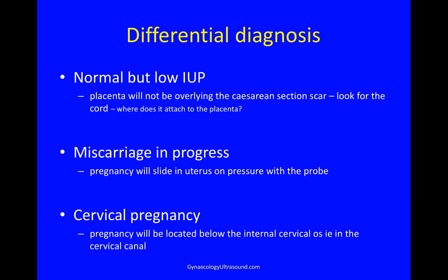The differential diagnosis of a caesarean scar pregnancy is a normal but low-lying intrauterine pregnancy — in this case the placenta will not be overlying the caesarean section scar, so look for the cord: where does it attach to the placenta, and where is the placenta attached to the uterus? Another possibility is a miscarriage in progress — in this case the pregnancy will slide in the uterus on pressure with the probe and not be implanted low. Or a cervical pregnancy, where the pregnancy will be located below the internal cervical os, that is in the cervical canal.